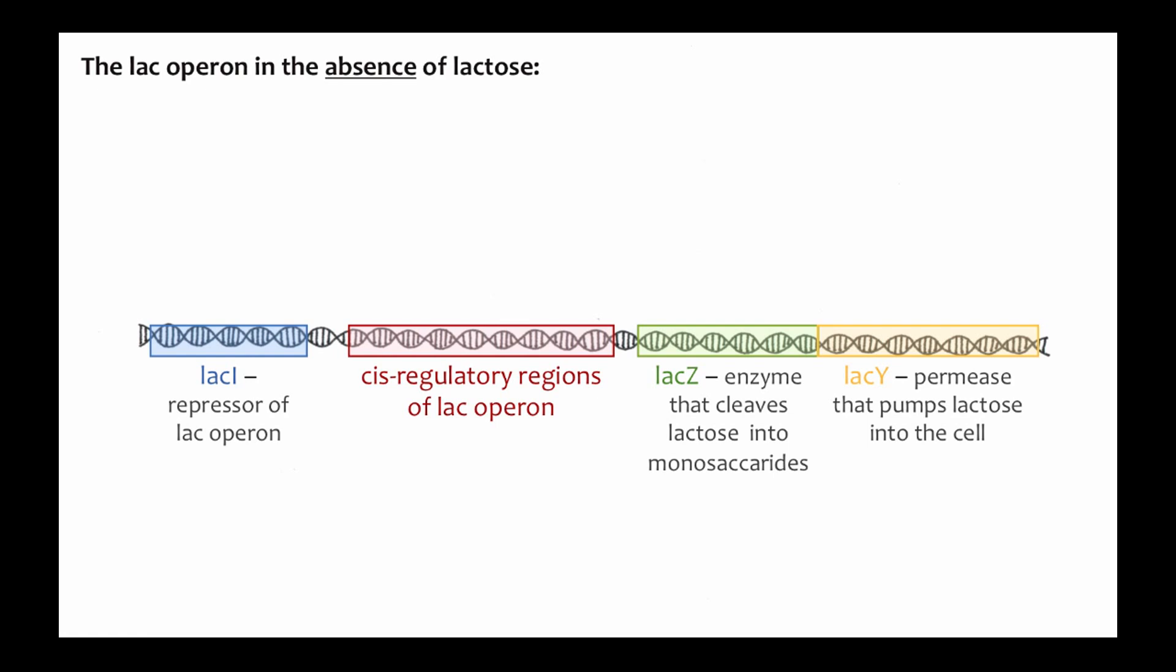So let's start with what happens when the bacterial cell finds itself in an environment where there isn't any lactose around. The lac repressor gene is transcribed and translated to make repressor protein. The repressor protein binds to the operator control region. And when RNA polymerase binds to the promoter and tries to move down the DNA, it runs into the repressor and falls off of the DNA. So Lac Z and Lac Y are not transcribed or translated.